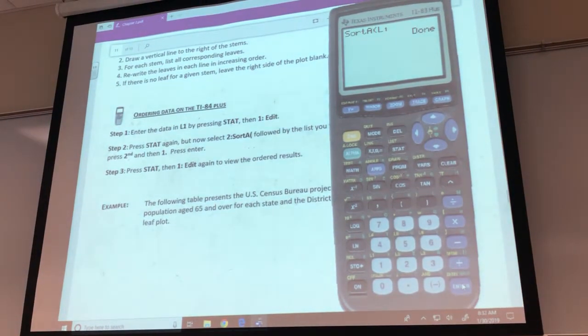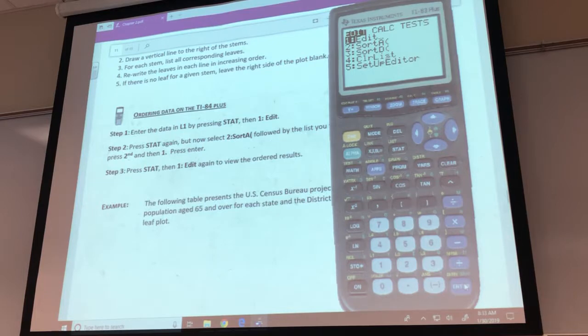And then if you hit enter, it just says done, but it doesn't show you anything. You need to actually go back into your list. So if you go to stat, edit, under L1, now we've got everything in order, in numerical order.